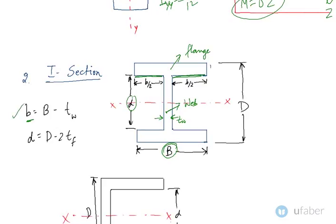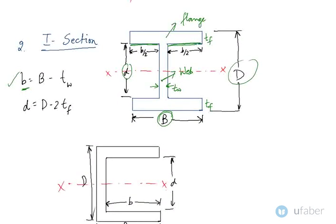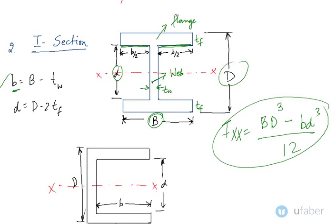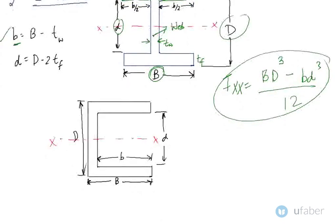The bottom flange and D is the depth of the cross section. The moment of inertia about the x-axis uses capital B. This same expression is also valid for a C-section, which is also called a channel section, with the dimensions as given in the diagram.